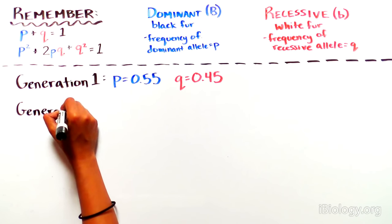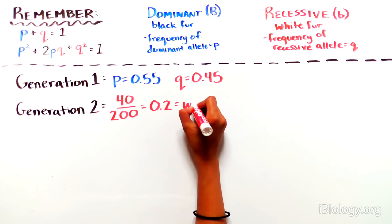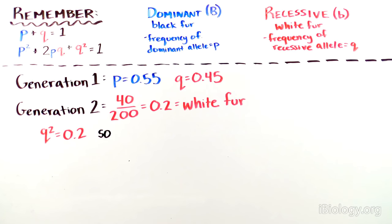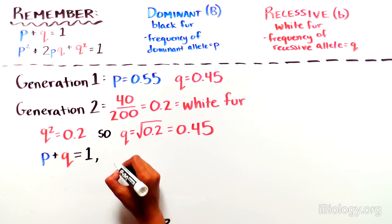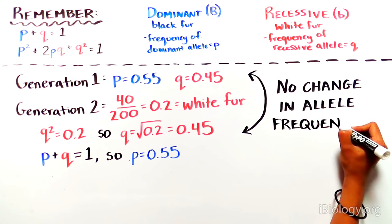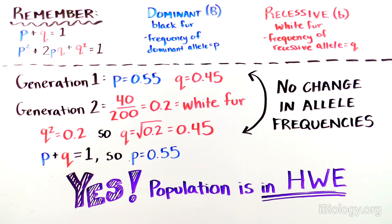These squirrels breed, and in a second generation you go back to the forest to determine if the population is in Hardy-Weinberg equilibrium. You count and see that 40 of the 200 squirrels have white fur, so Q² = 0.2, giving Q = 0.45 and P = 0.55. The allele frequencies did not change over time. We can therefore accept the Hardy-Weinberg equilibrium null hypothesis and say that yes, this population is in Hardy-Weinberg equilibrium and has not undergone evolution.